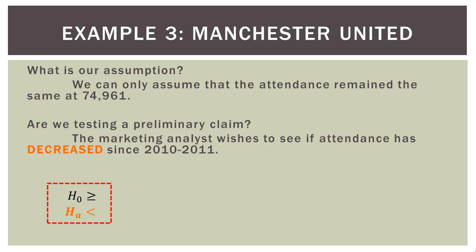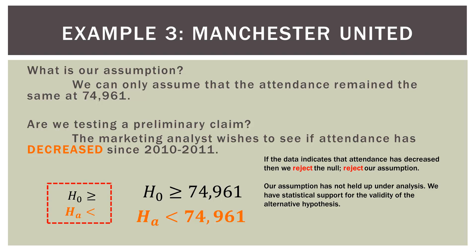Our assumption is that attendance has remained the same or even possibly increased — that is our null. We're concerned about a decrease, so that's our alternative. Our null is that attendance has increased or remained the same; our alternative is that it has decreased. That is the preliminary conjecture the analyst wants to test. If the data indicates attendance has decreased — say an average of 68,000 — then we reject our null, moving to the alternative: attendance has in fact decreased since 2010-2011.